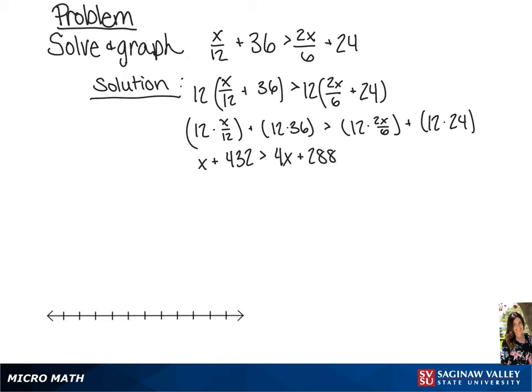Now we're going to subtract 288 from each side, giving us x plus 144 is greater than 4x.